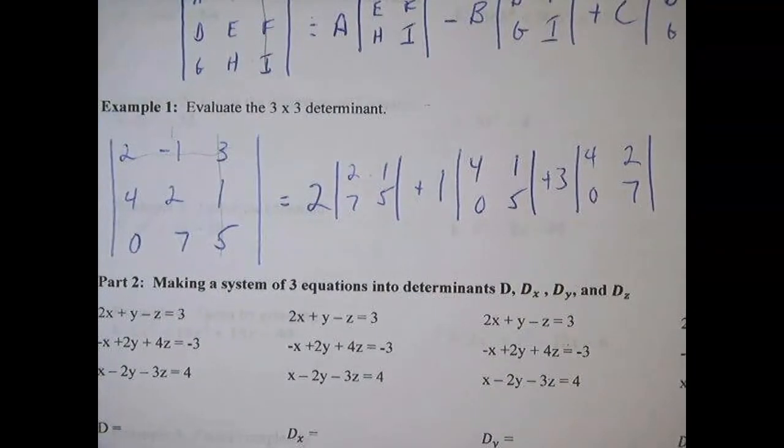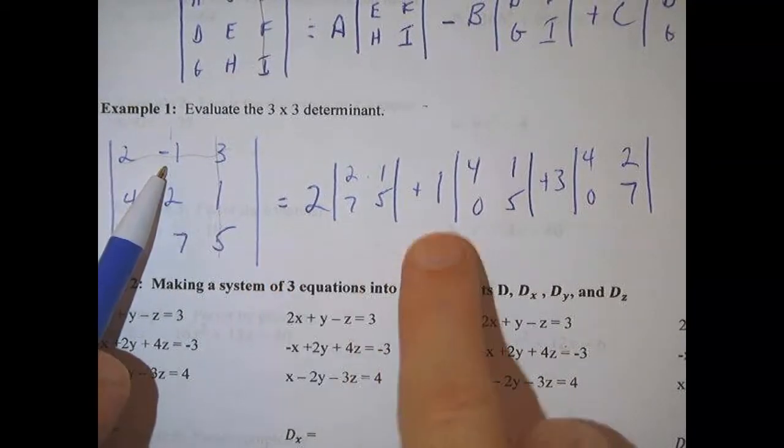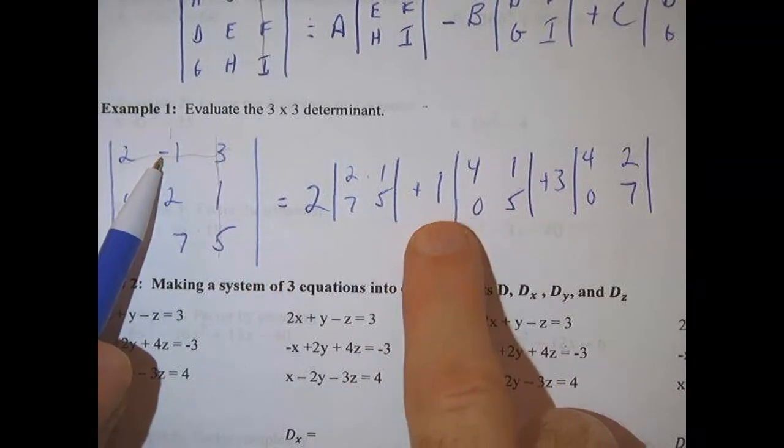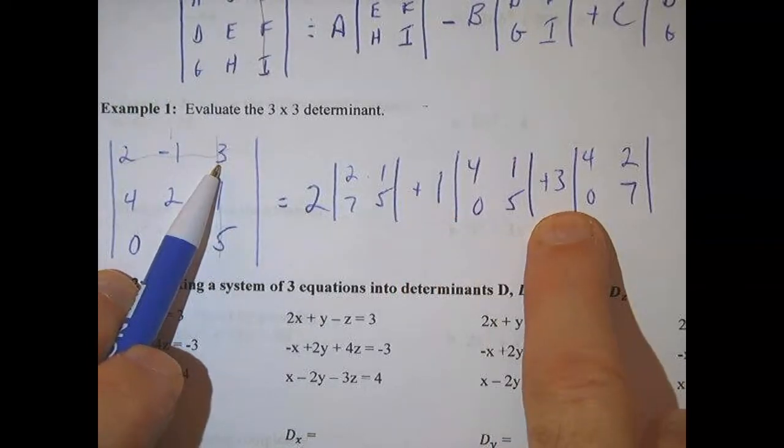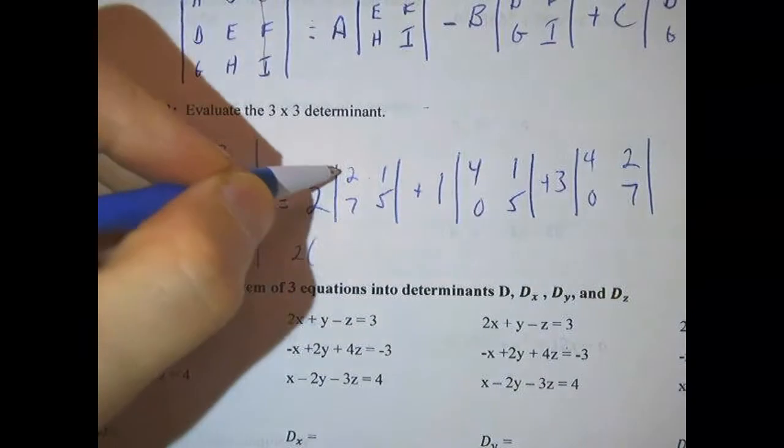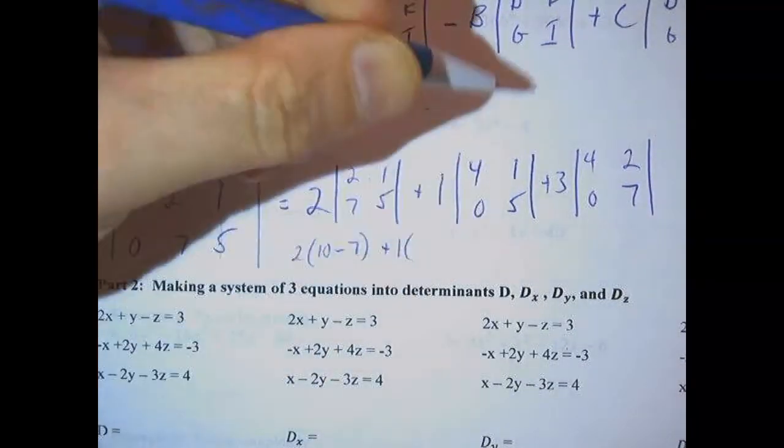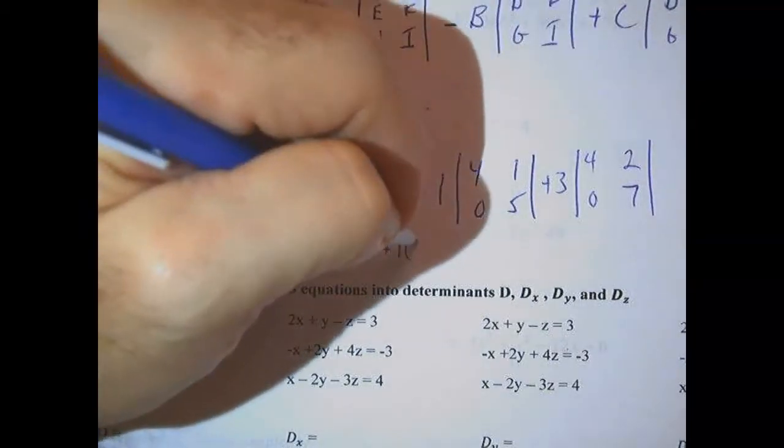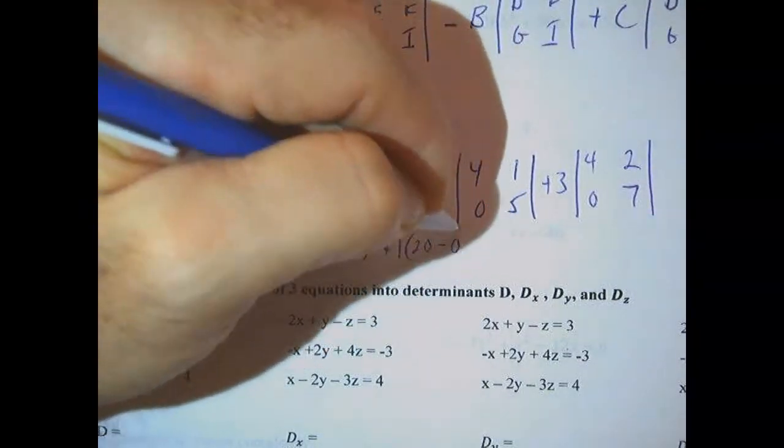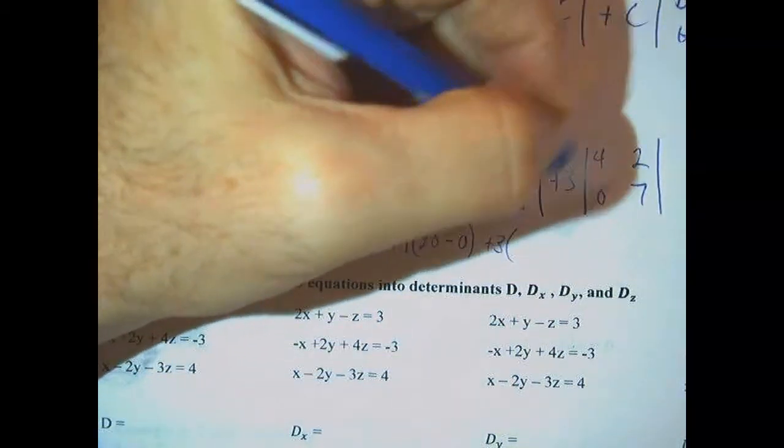I'm one step closer to getting this just to be a number. Notice that this is the same sign, so it's plus. This is the opposite sign, so it's minus 1 to the opposite. And this is the same sign.